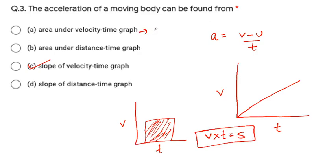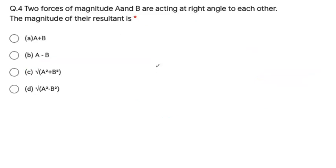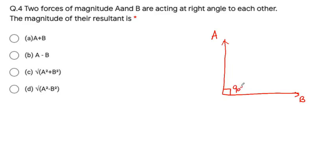There is also one option: area under the velocity-time graph. In that case, you find the value of the shaded area under the velocity-time graph. That is velocity into time, which is known as distance or displacement. So area under the velocity-time graph gives displacement, while the slope of the velocity-time graph gives acceleration. Some students get confused on this question.